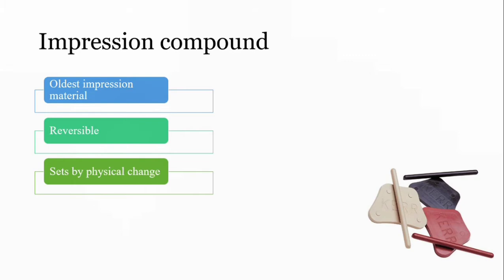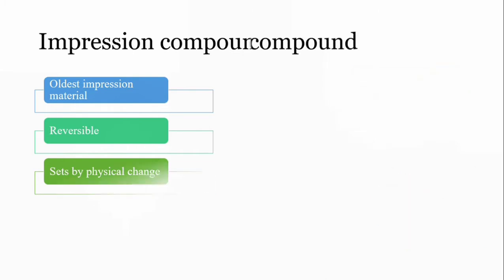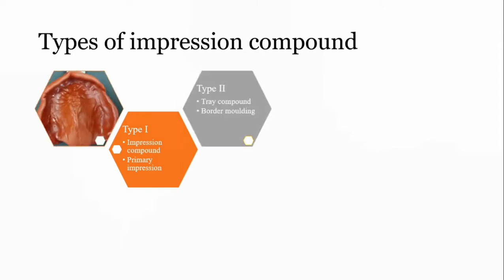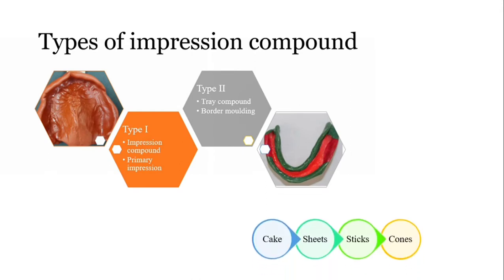There are two types of impression compounds. The first type is impression compound used for taking primary impressions of the edentulous ridge. The second type is a tray compound or green stick compound, used for body molding in secondary impressions. This impression material is available in different forms in the shop—it can be available as cake, sheet, sticks, or cones.